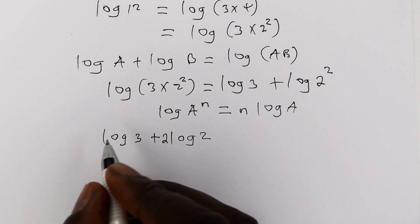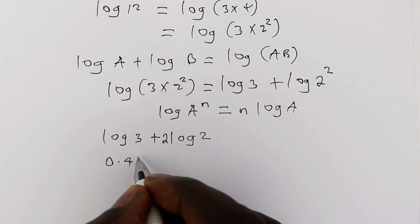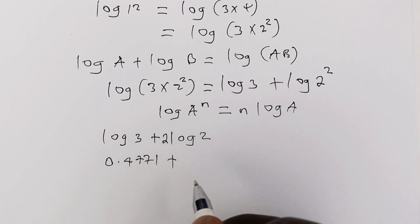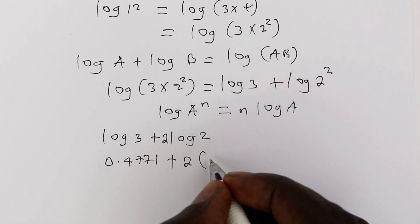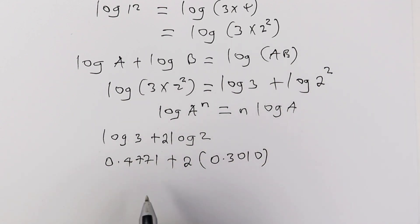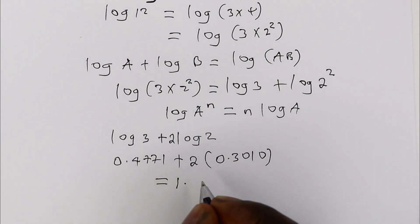We have log 3 to be 0.4771 and log 2 is 0.3010, but there are 2 of them. So you multiply that by 2, and that is 2 times 0.3010. That will give you 1.0791.